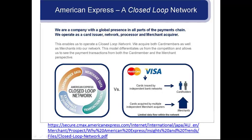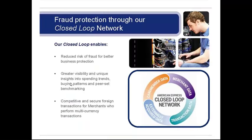As opposed to, say, the open-loop MasterCard or Visa networks where there are all these intermediaries — independent merchant acquirers, which are the independent banks, and independent bank networks issuing the cards — they can all fight with each other over use of the data involved in transactions, and all the little banks are holding it independently. With Amex, Amex has everything. Another thing is that since they've got control of the entire system, they have reduced risk of fraud, and they get unique insights into people's spending trends, buying patterns, and benchmarking.